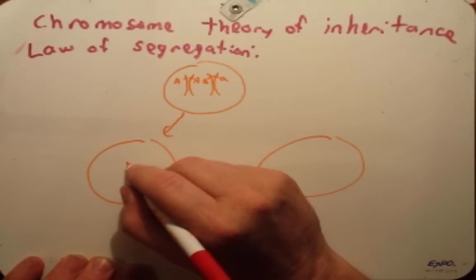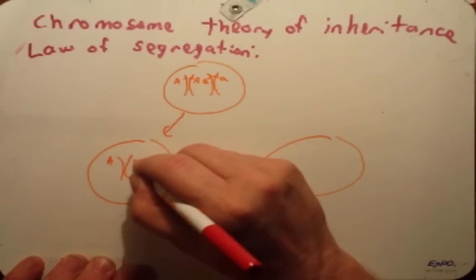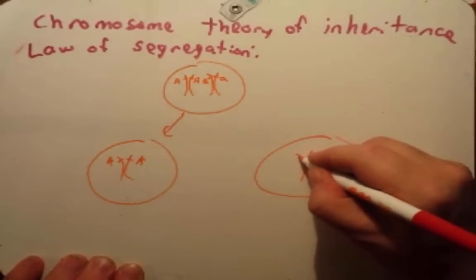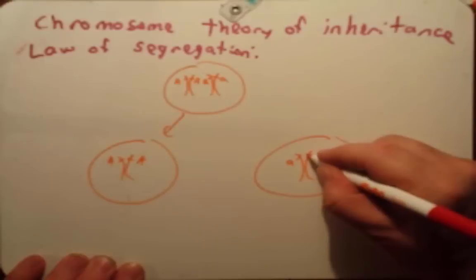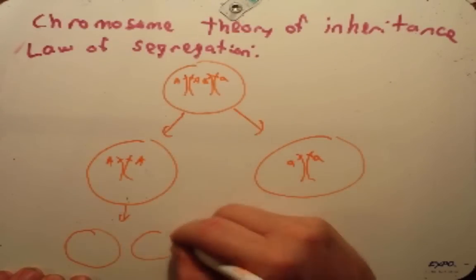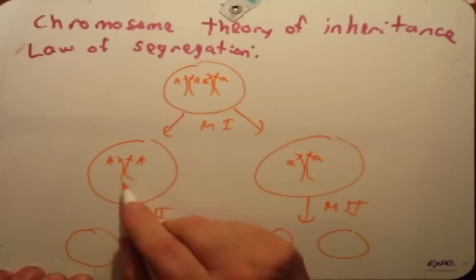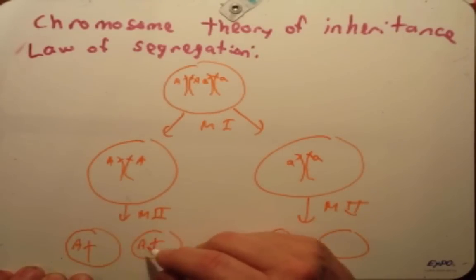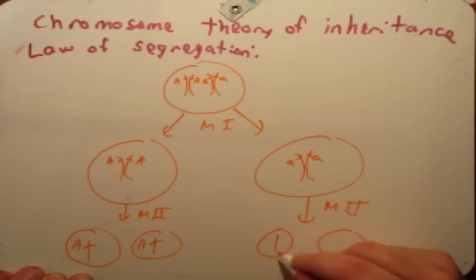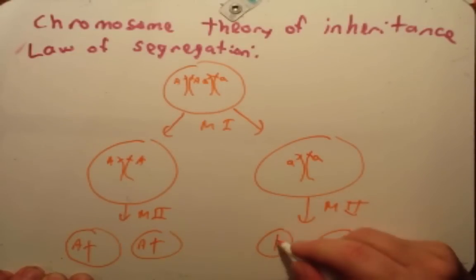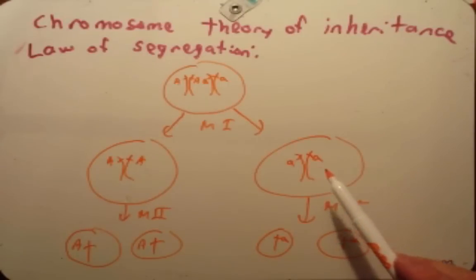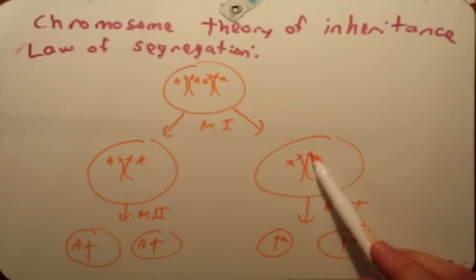you're going to have the big A gene on each of the sister chromatids, and over here you're going to have the little A gene. Then as you go through meiosis II, they pull apart from each other, and we end up with 50% of our gametes with big A and 50% of our gametes with little A. Mendel made these predictions; he just didn't know the mechanism for it. We now know the mechanism is that the genes he was observing through the traits are actually on these chromosomes.